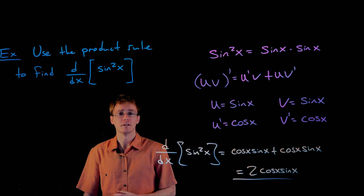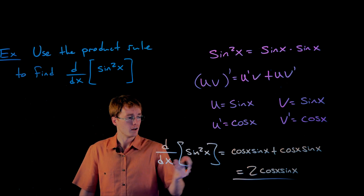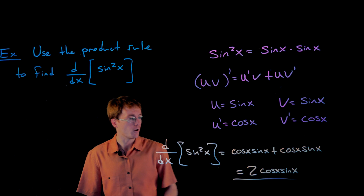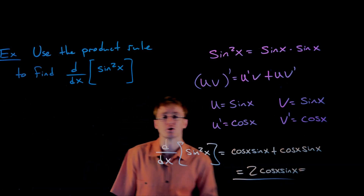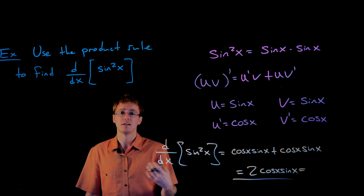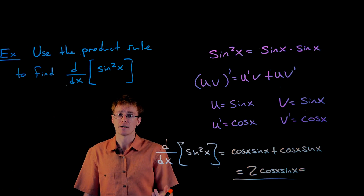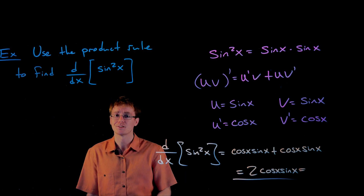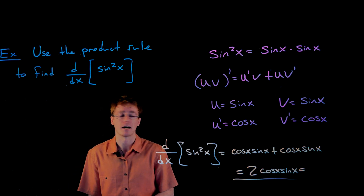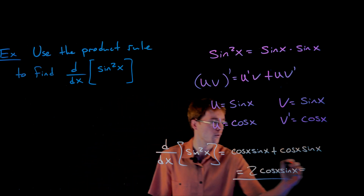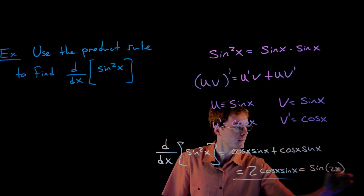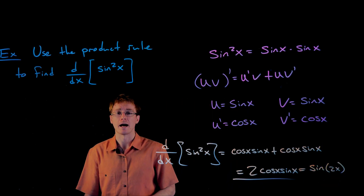That is the derivative of our sine squared function — one way to leave it. But if you remember your trig identities, you might recognize that two sine of x times cosine of x is the double angle identity for sine. So we could rewrite this as sine of two x.